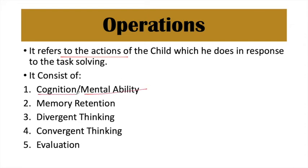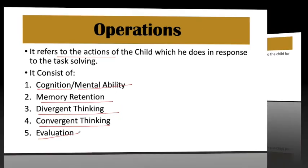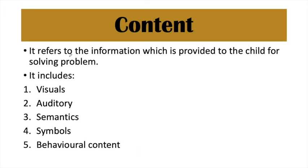Next under operations is memory retention — also called memory recognition — which refers to how existing knowledge is used in new problem solving. Then comes divergent thinking or convergent thinking — which one they will use. And next is evaluation — how they evaluate the actions they have performed and how they draw their conclusion. These all come under operations.